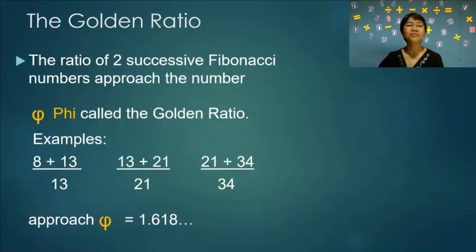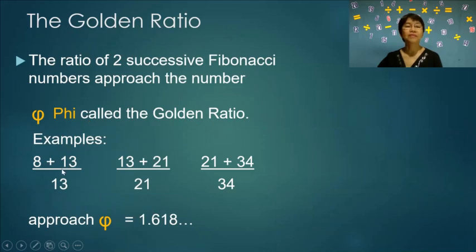The golden ratio. The ratio of two successive Fibonacci numbers approaches the number phi, called the golden ratio. For example, (8+13)/13, (13+21)/21, and (21+34)/34 all approach phi, which is approximately 1.618.